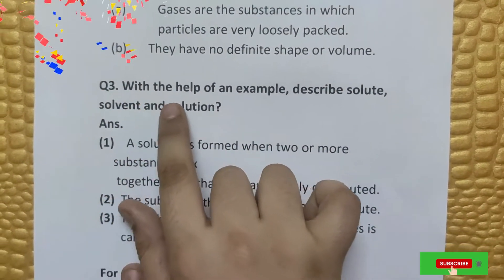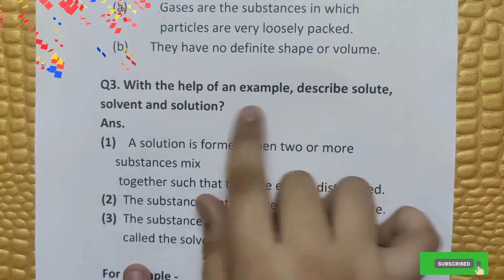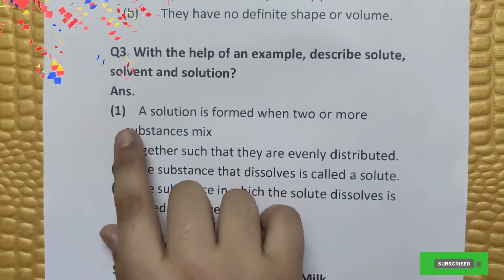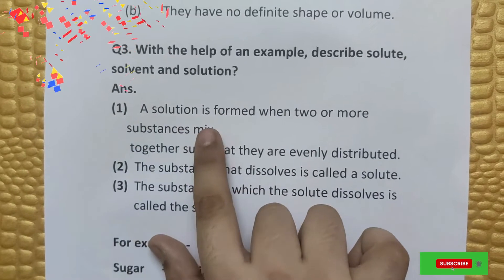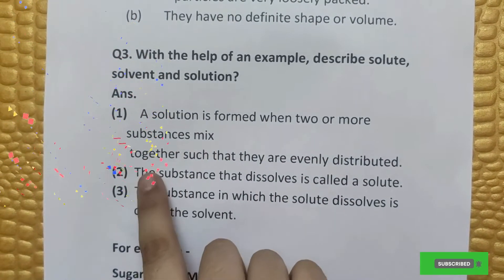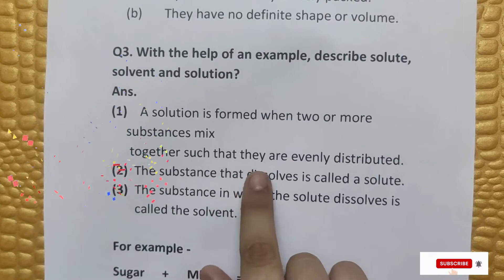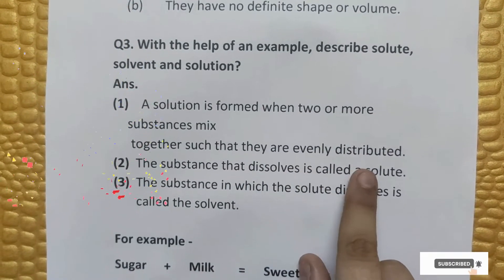Question number three: With the help of an example, describe solute, solvent and solution. Answer: A solution is formed when two or more substances mix together such that they are evenly distributed.